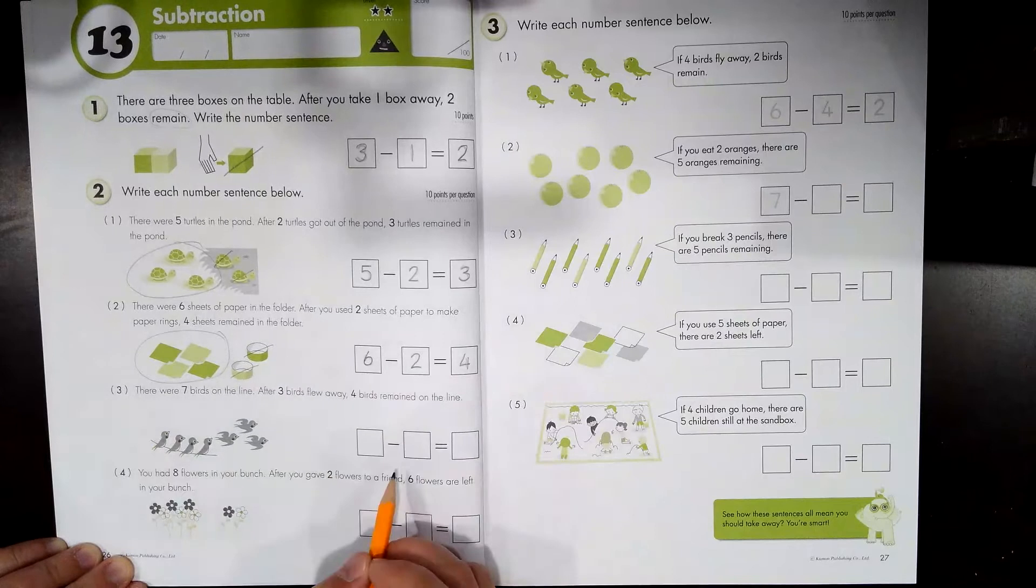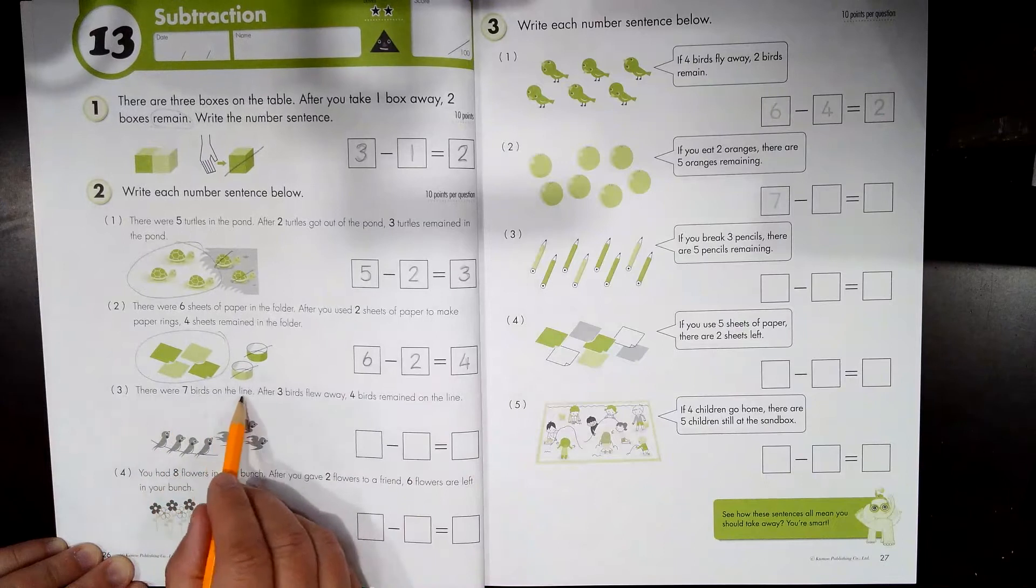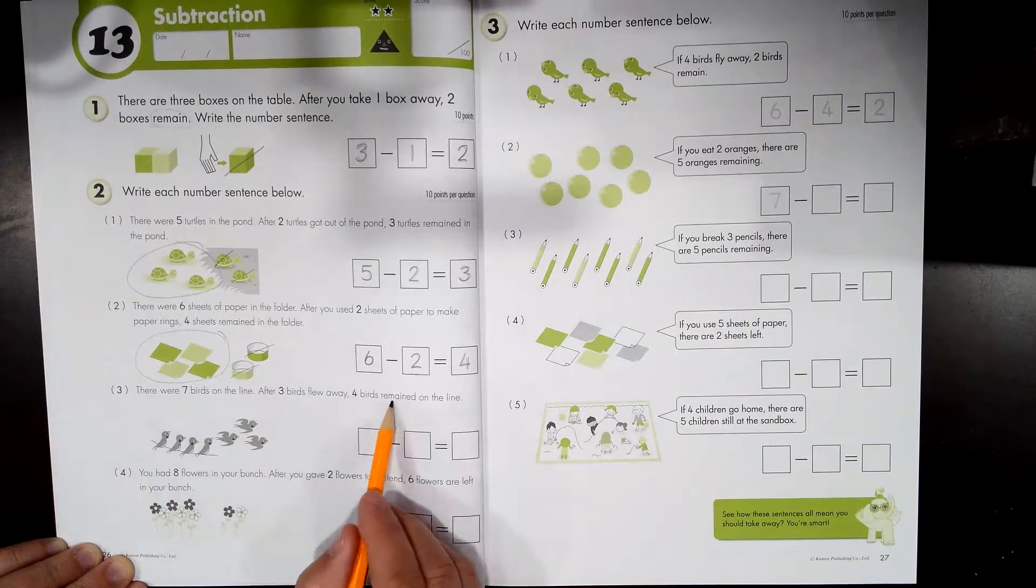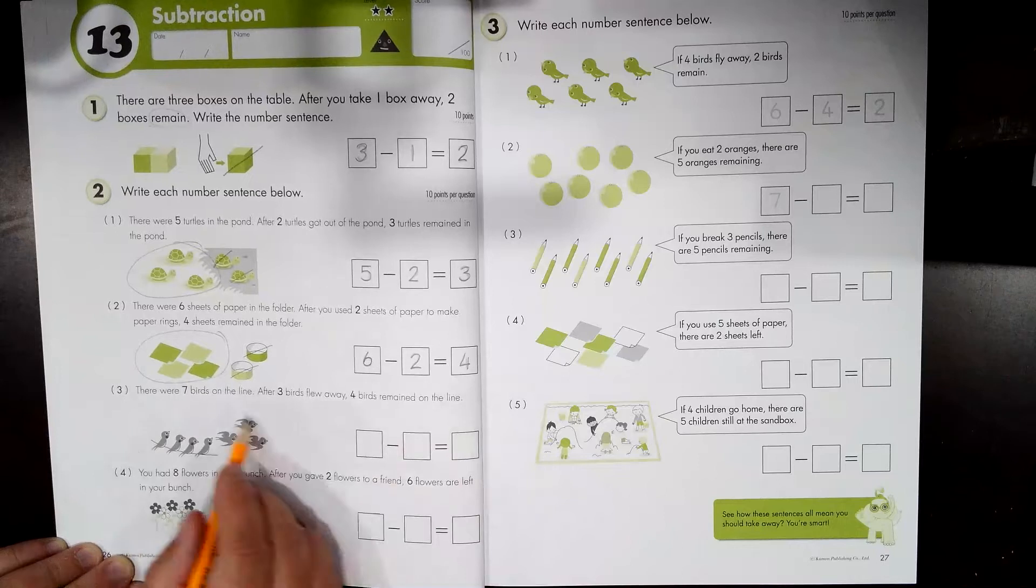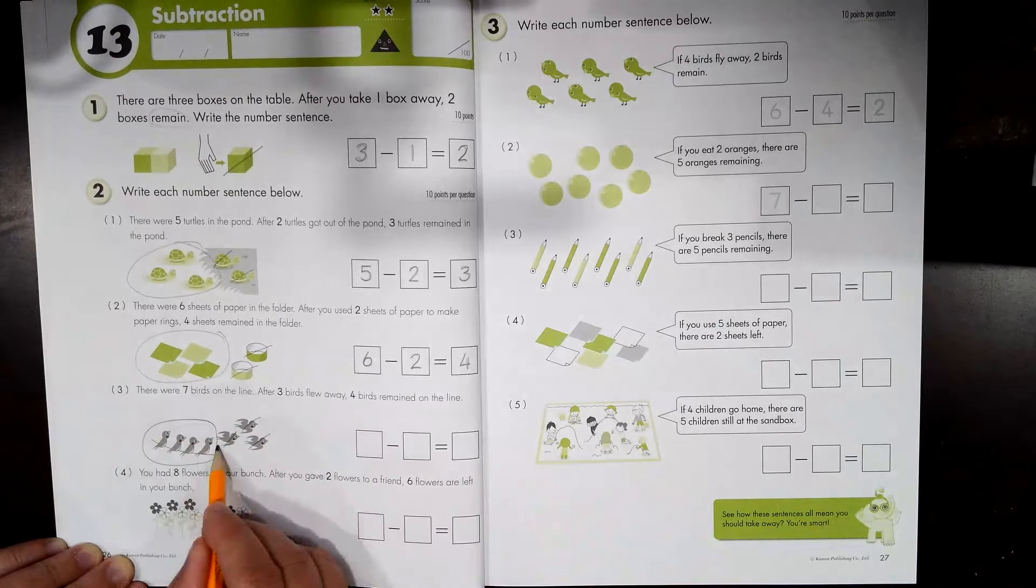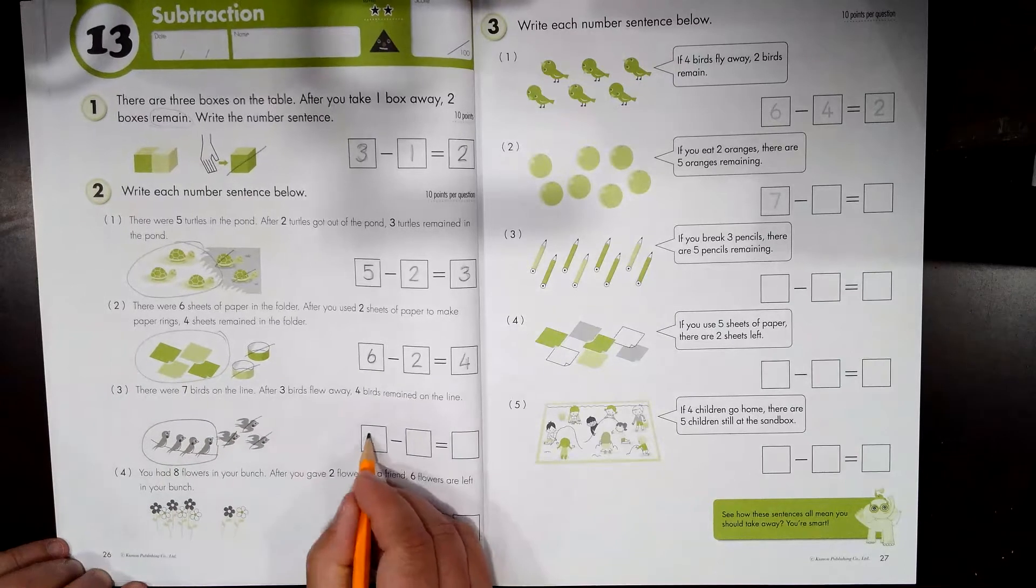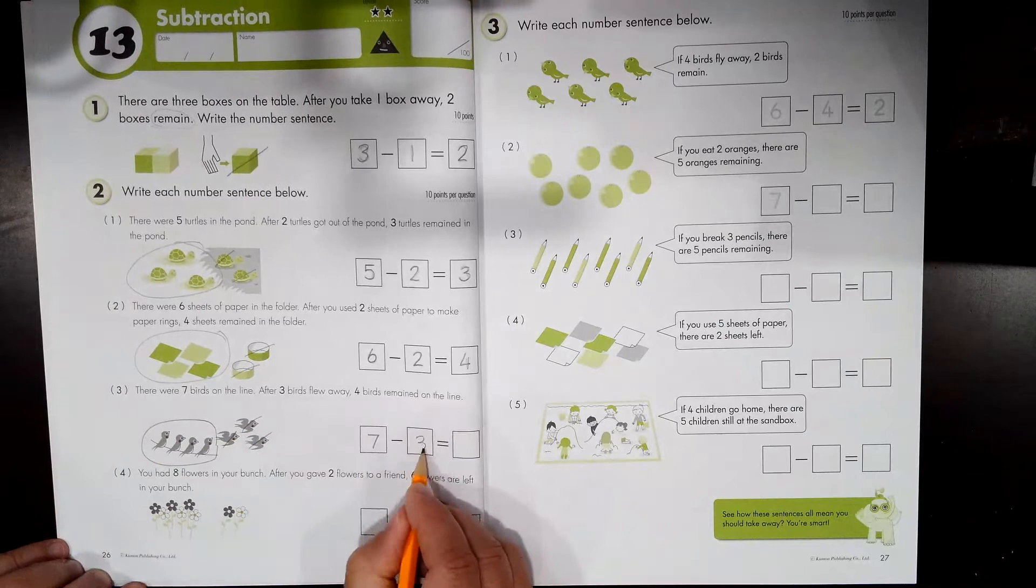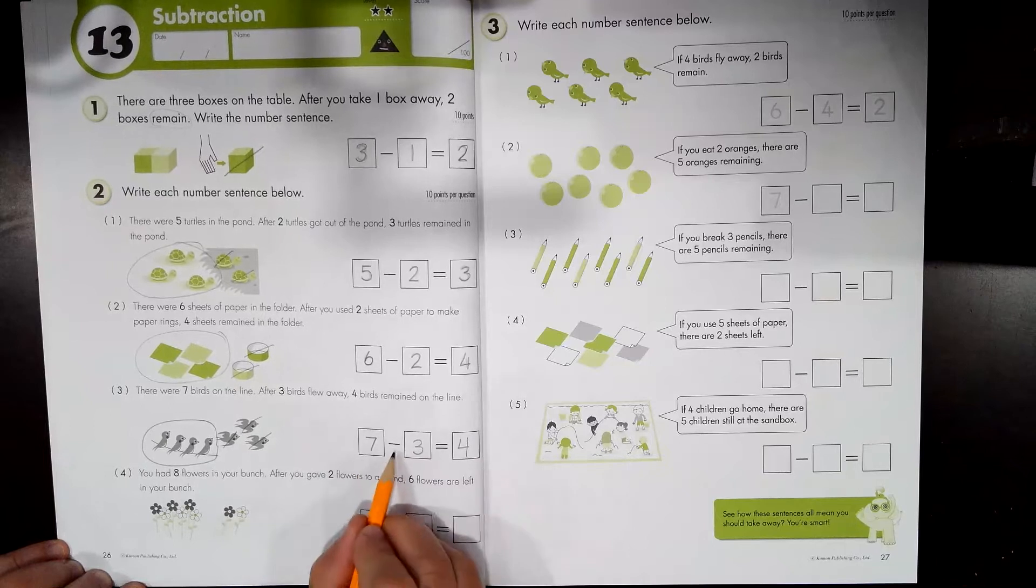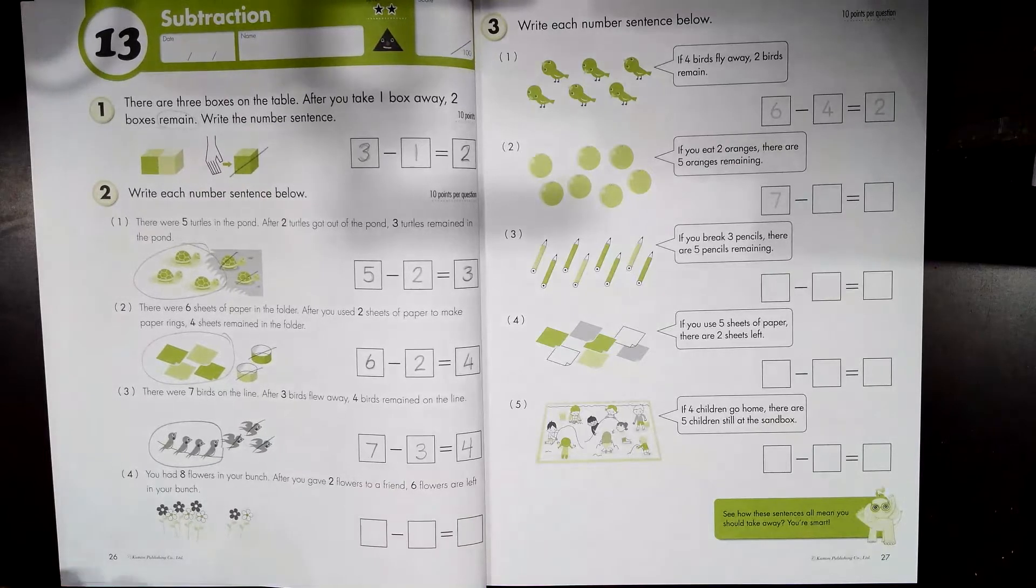I'm gonna read number three and you're gonna write this all by yourself. There were seven birds on the line. After three birds flew away, four birds remained on the line. Seven birds, three flew away, four remain. What's your number sentence? Seven birds, three flew away, four remained. Your number sentence should look like this. Seven minus three that flew away equals four remain. All right, good job.